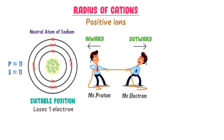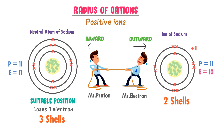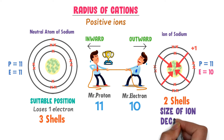This sodium atom will lose one electron to get stability. After losing one electron, it is no more a neutral atom — rather, it is an ion. In the sodium atom there are three shells, while in the sodium ion there are only two shells due to losing one electron. There are 11 protons and 10 electrons in the sodium ion. Here, protons dominate electrons because there are 11 protons and 10 electrons. So protons win the tug of war and pull the electrons towards the nucleus, and the size of the sodium ion decreases.